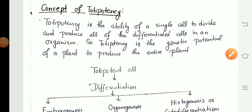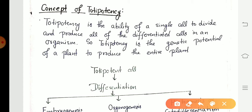Dear students, today I am going to discuss about the concept of totipotency. So what is totipotency? Totipotency is the ability of a single cell to divide and produce all of the differentiated cells in an organism.